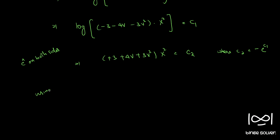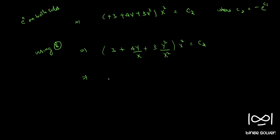Now using the substitution from equation 8, where V equals capital Y by capital X, we substitute back: 3 plus 4 times Y over X plus 3 times Y squared over X squared, times X squared. Simplifying, this gives 3X squared plus 4YX plus 3Y squared equals a constant.